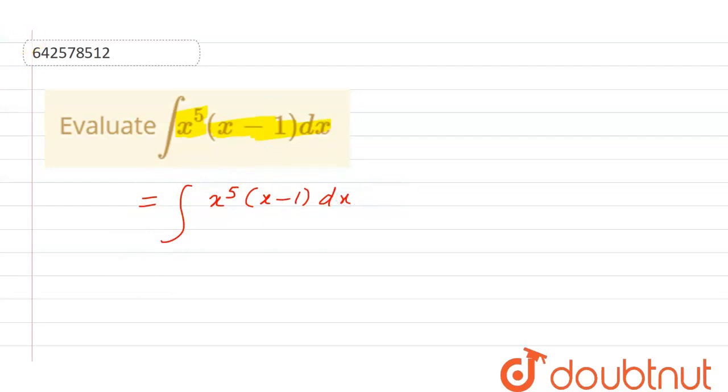First of all, we can open the bracket. We can multiply x raised to the power 5 with x, which will be x raised to the power 6. And x raised to the power 5 into 1 will be x raised to the power 5 into dx.